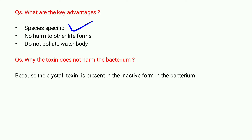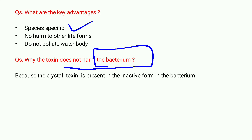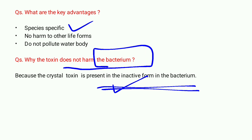Another important question often asked is: since BT toxin is so effective, why does it only kill the targeted species and not harm the bacterium that produces it? The answer is simple — in the bacterium it is present in the inactive form. Unless it reaches the gut of the targeted insect, it will not convert into the active form. In the inactive form, there is no question of harming the bacterium.